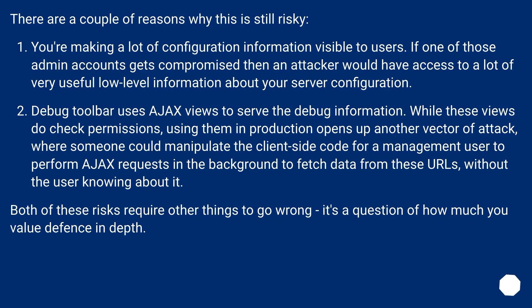Debug toolbar uses Ajax views to serve the debug information. While these views do check permissions, using them in production opens up another vector of attack where someone could manipulate the client-side code for a management user to perform Ajax requests in the background to fetch data from these URLs without the user knowing about it.